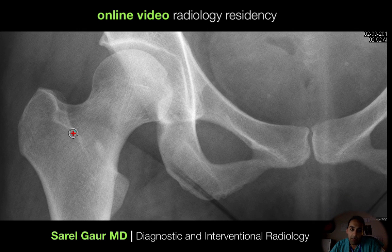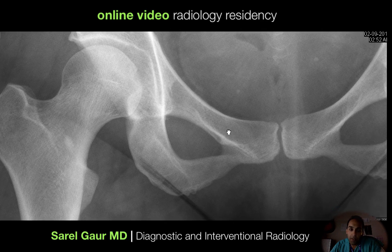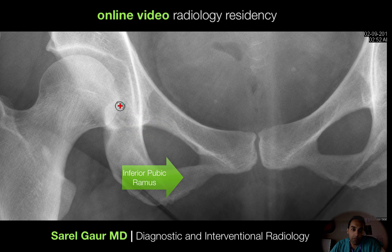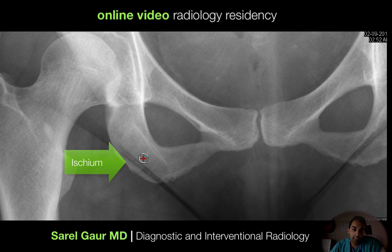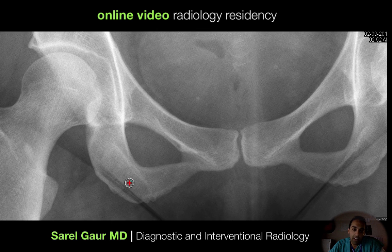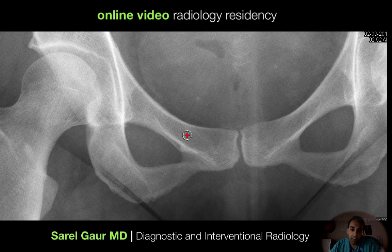I then move from the femoral neck and head into the pubic rami. Here you can see the superior pubic ramus and the inferior pubic ramus. This is the ischium — the bone that, when you're sitting down, is the bony protuberance you're sitting on: the ischial tuberosity. I'm definitely looking for any lucency or cracks in this smooth bone, the same with the superior and inferior pubic ramus. These are where subtle fractures occur that people miss, especially when they're zoomed out.